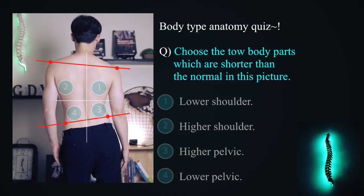If your client's latissimus dorsi muscle is shorter than normal, you should help them to stretch and relax it to keep the normal length. If your client's latissimus dorsi muscle is overstretched, you should shorten it naturally until it reaches normal length. Accomplishing this is straightforward — I will discuss it in the next episode. Body type anatomy quiz.